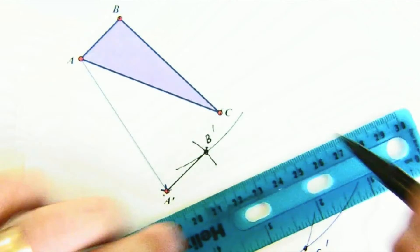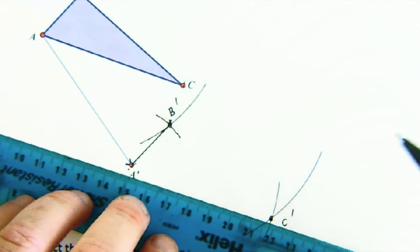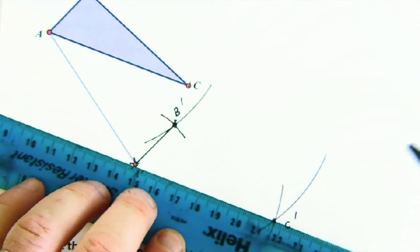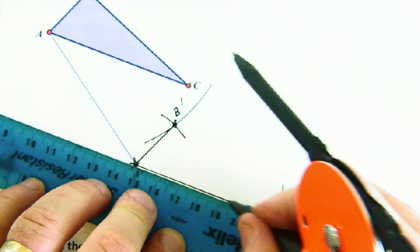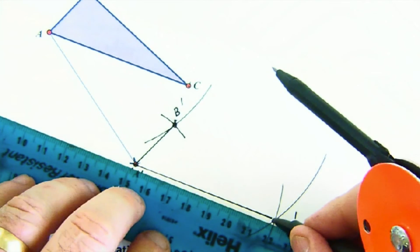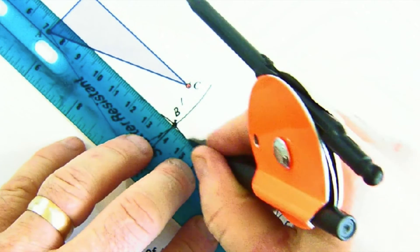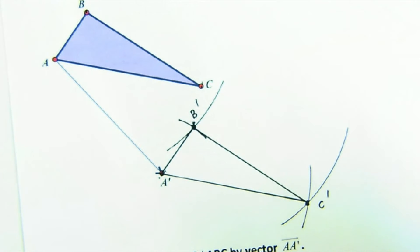Connect those vertices. And it will create a triangle that is congruent to the original because of the isometric nature of our translation. Beautiful.